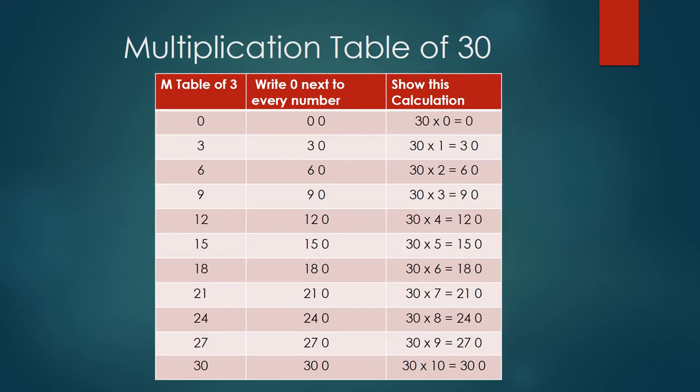Similarly, we can teach them multiplication table of 30. In this case, we will be writing vertically tables of 3: 3×0=0, 3×1=3, 3×2=6, 3×3=9, 3×4=12, 3×5=15, 3×6=18, 3×7=21, 3×8=24, 3×9=27, 3×10=30.